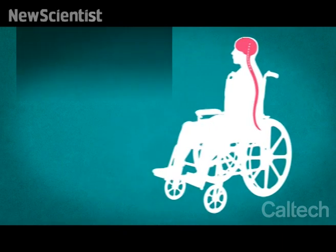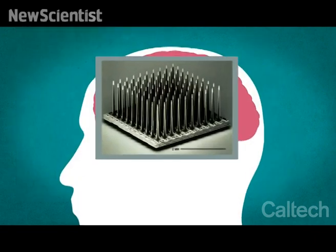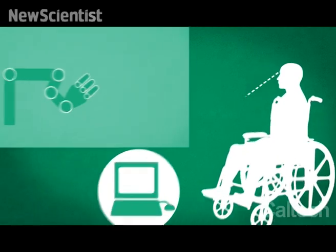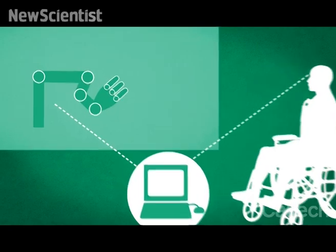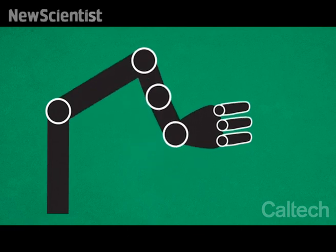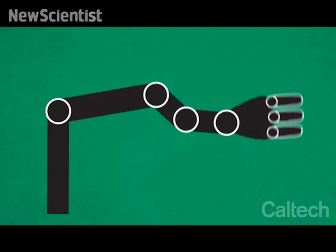Neural prosthetics facilitate movement via artificial limbs. Tiny electrodes implanted in the motor cortex transmit signals to a computer, where they are translated as instructions for a robotic arm. But because the motor cortex is concerned with the mechanics of movement, its signals often result in slow, jerky motions.